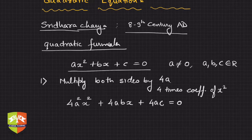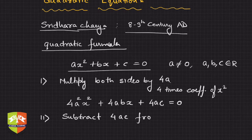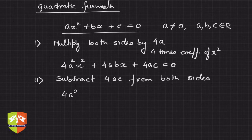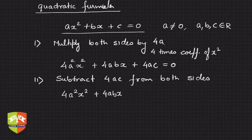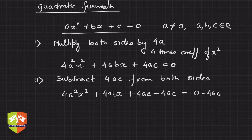Step two: subtract 4ac from both sides. So we get 4a²x² + 4abx + 4ac, and subtracting 4ac from here gives us 0 minus 4ac on the right-hand side.